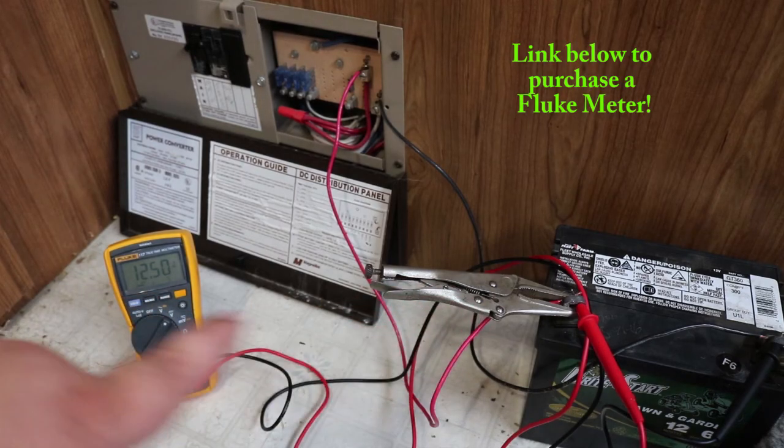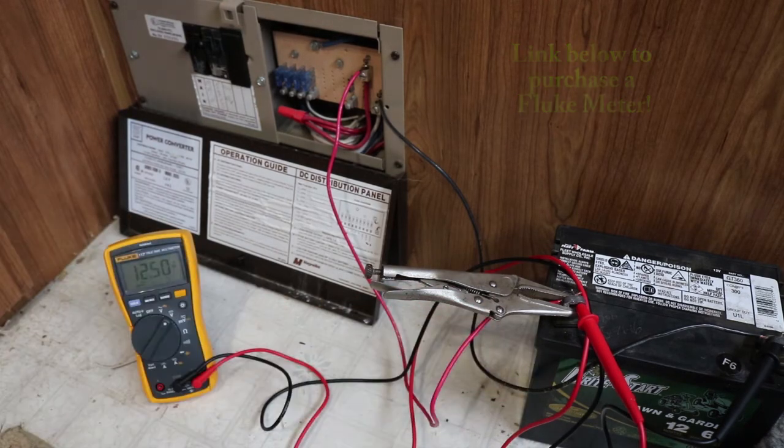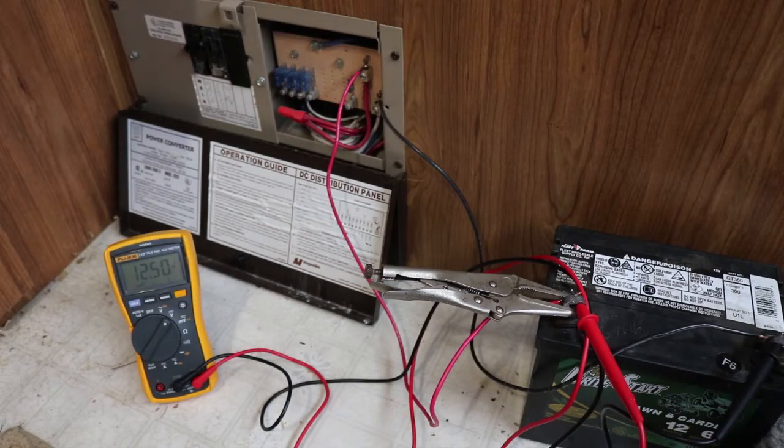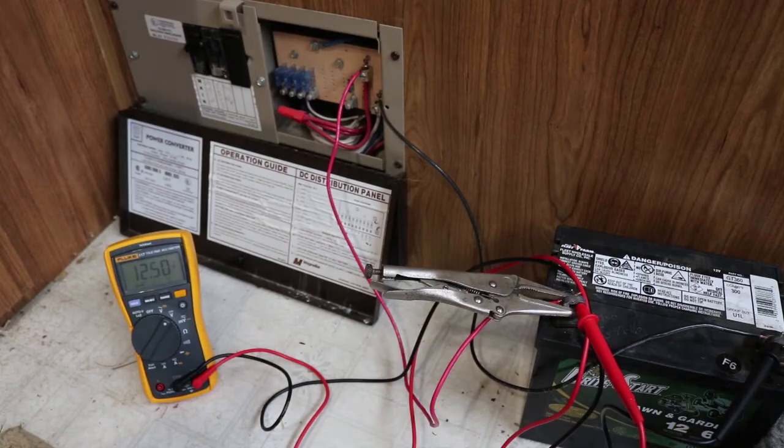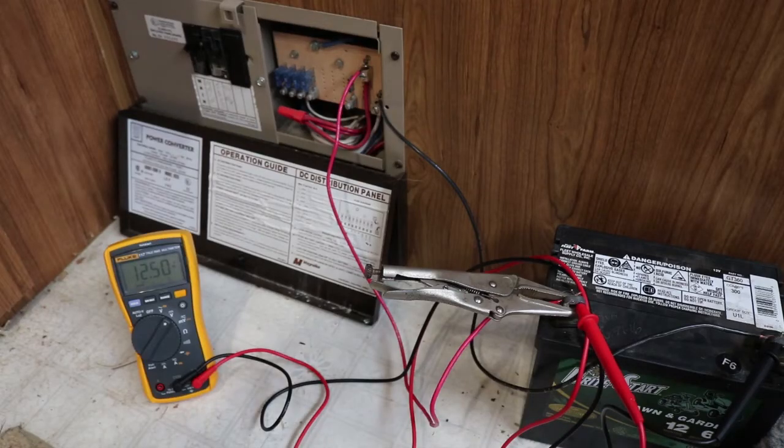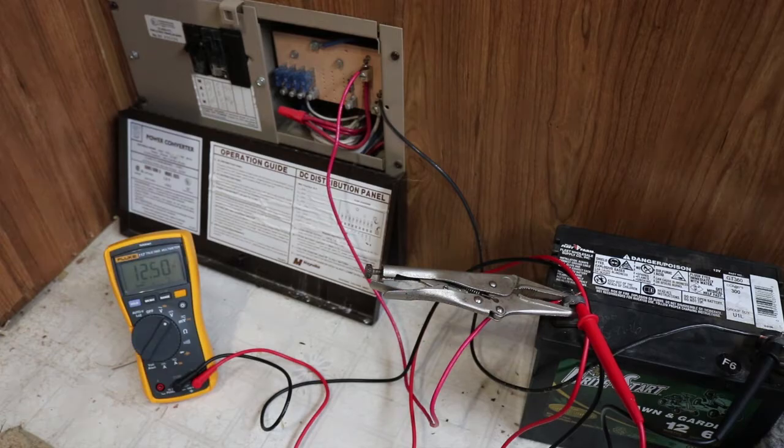When I turn on the main breaker for the camper, that will allow shore power into the power converter. When that is on, it'll charge the battery and it'll also run any lights, fans, or furnace in the camper when you need it. Also, the water pump runs off 12 volt in most campers.